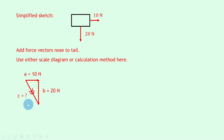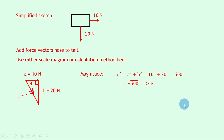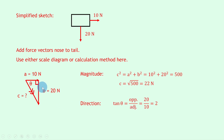To find the magnitude we use Pythagoras: C squared equals A squared plus B squared. Putting in the numbers gives 10 squared plus 20 squared which equals 500. Taking the square root gives C equals 22 newtons. For the direction we use tan theta: tan theta equals opposite over adjacent. Opposite the angle is 20, adjacent is 10, so we get 20 over 10 which equals 2.